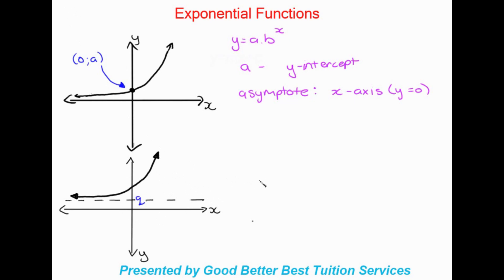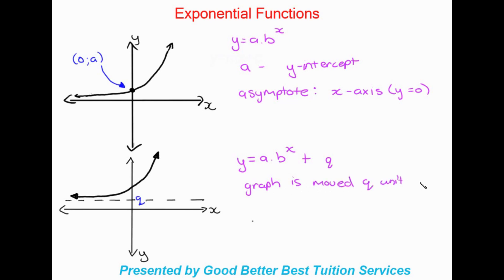The exponential function will never touch the asymptote. Moving on to the next graph, this exponential function is represented by y = a × b^x + q. We are familiar with 'a' already, and now 'q' is new. The graph is moved q units up or down, and q is our new asymptote, where y = q.